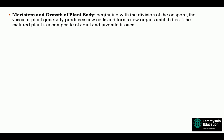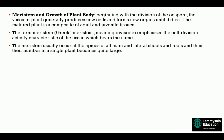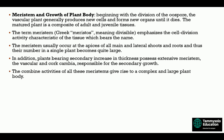The term 'meristos' means divisible, emphasizing the self-divisibility activity. Meristems usually occur at the apices of all main and lateral shoots and roots, so their number in a single plant becomes quite large. Plants bearing secondary increase in thickness possess extensive meristems. The vascular and cork cambium are responsible for secondary growth. The combined activities of all these meristems give rise to a complex and large plant body.